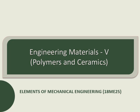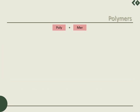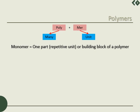Welcome to the fifth session of Engineering Materials, where we discuss about polymers and ceramics. Polymer — the term is made up of two components: poly and mer. Poly means many, mer means unit. Mer or monomer is the repetitive unit or building block of a polymer. Polymers are many monomers joined together by bonds.